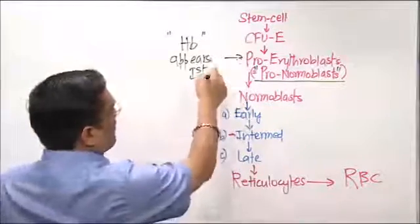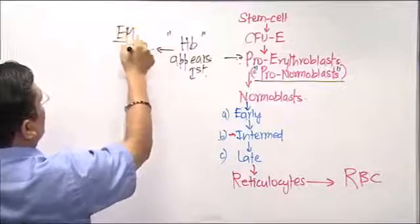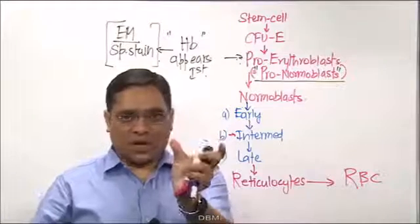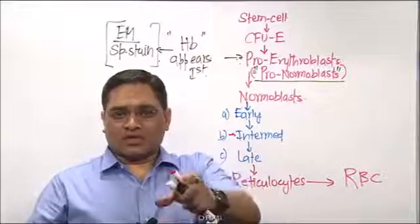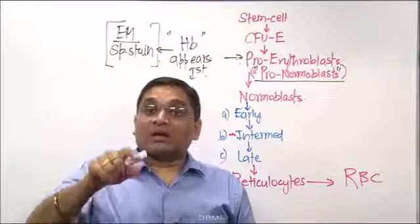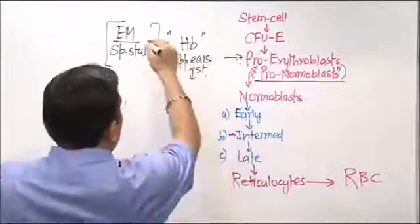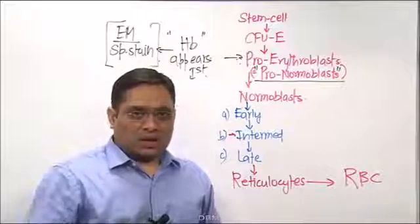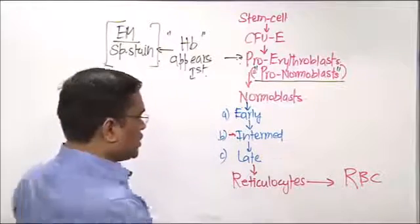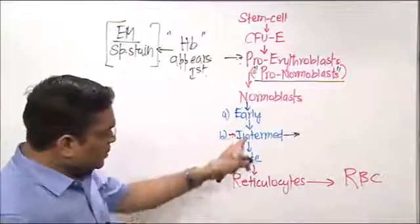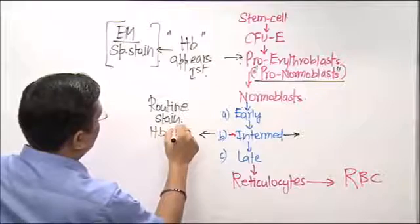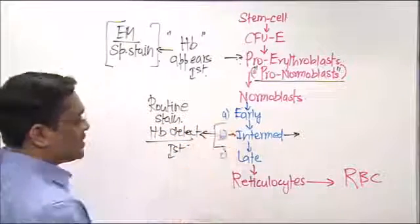When the examiner asks 'where does hemoglobin first appear,' the answer is pro erythroblasts or pro normoblasts. This hemoglobin appears as a bluish tinge inside the mitochondria but cannot be detected by routine staining — it is detected first by electron microscopy or special staining. If the examiner asks 'detected first by routine Giemsa staining,' then the answer will be intermediate normoblast.